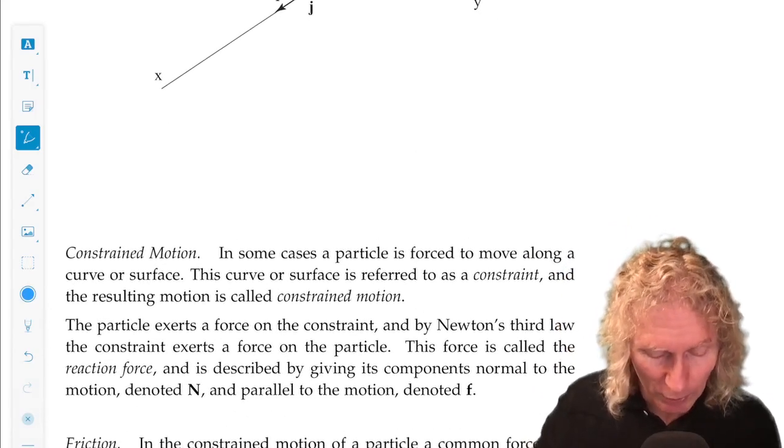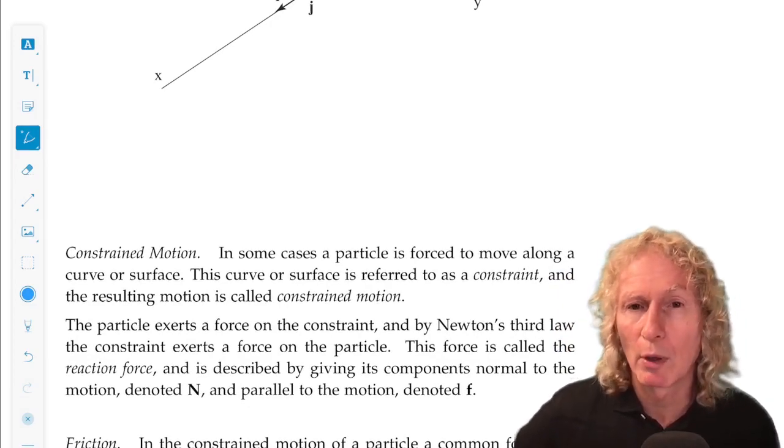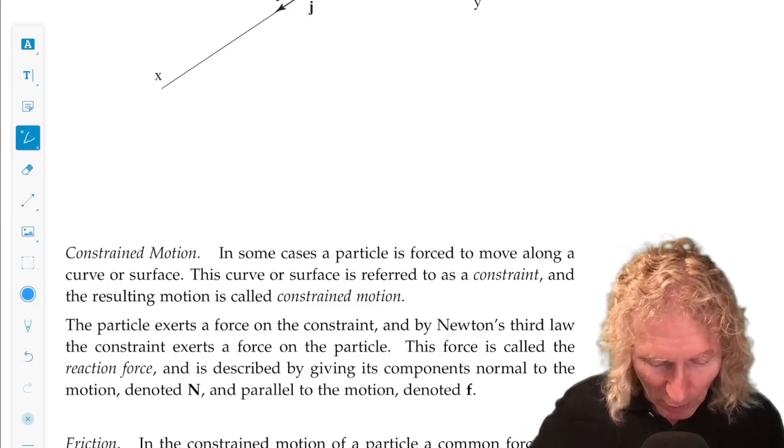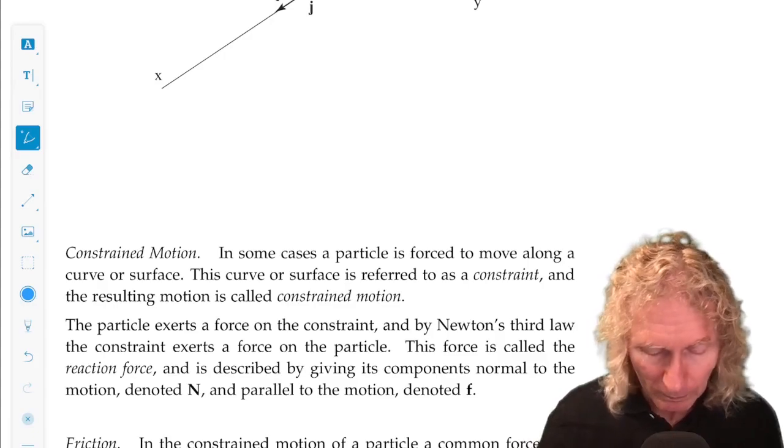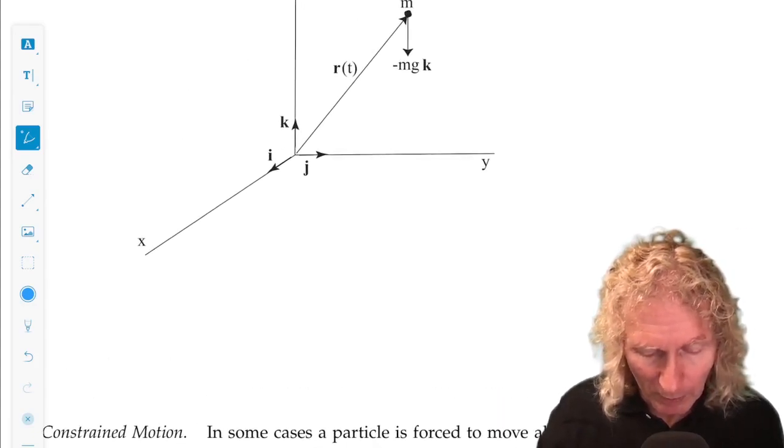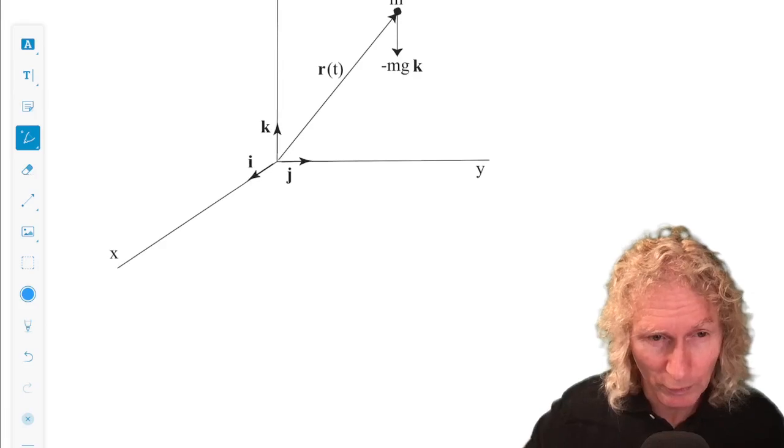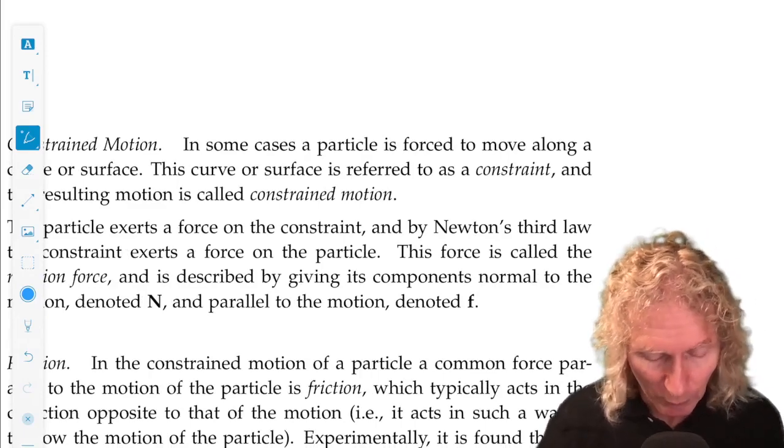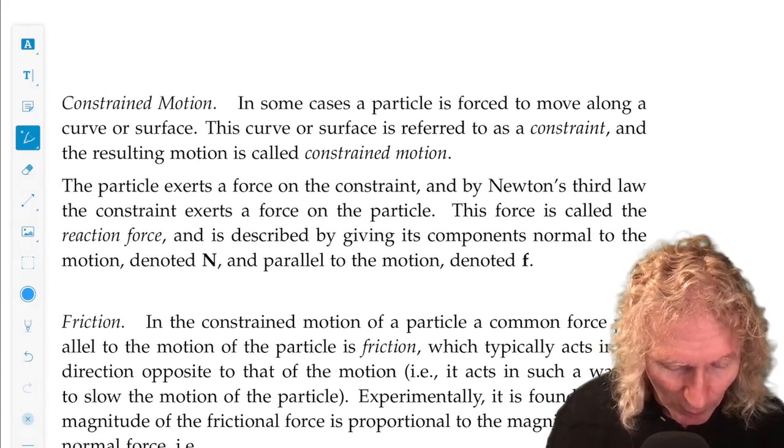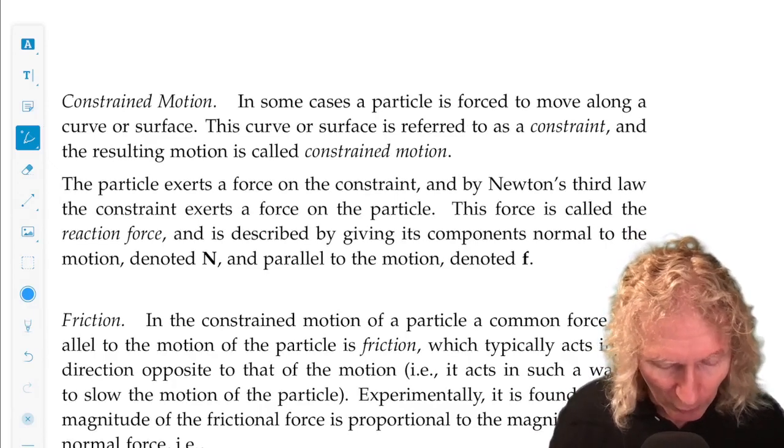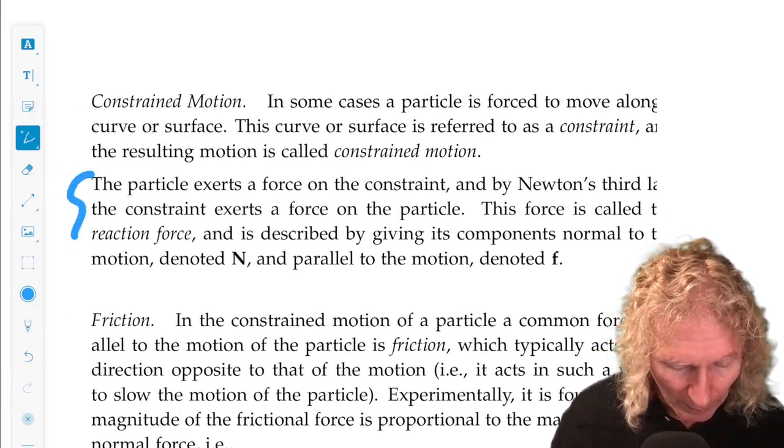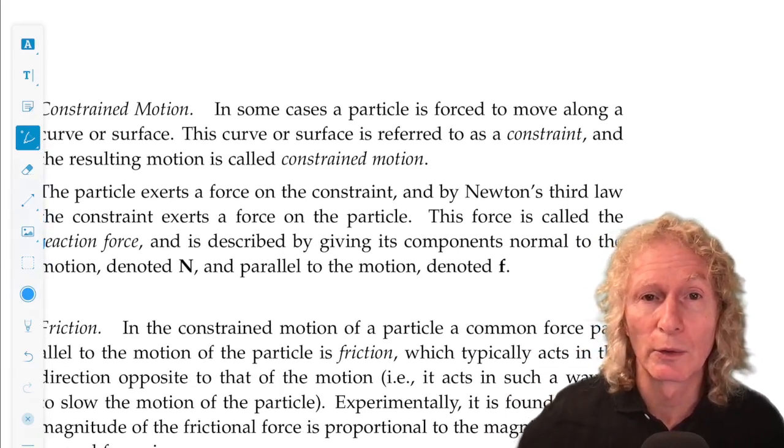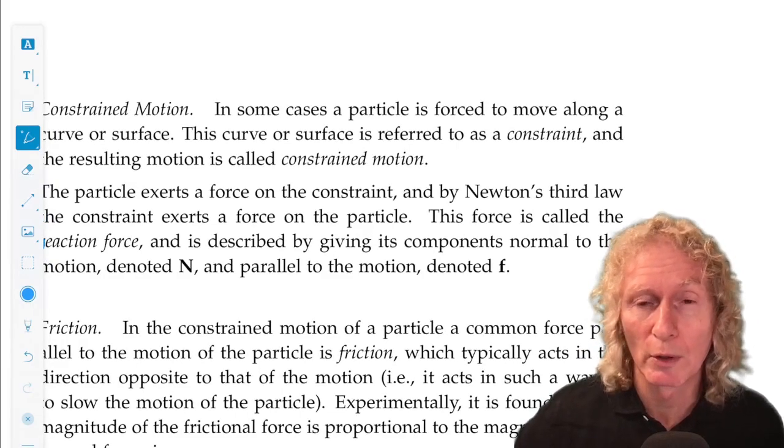So we're going to look at constrained motion. This is the situation where a particle is forced to move along a curve or surface. And gravity is going to be one of the forces that's acting in that case. But you could imagine the particle being forced to move along a curve or surface. And in that situation, this is one of the places we're going to use Newton's third law. The particle exerts a force on the constraint. And by Newton's third law, the constraint exerts a force on the particle, equal and opposite.